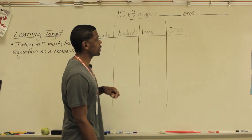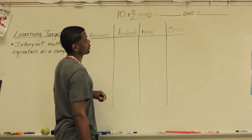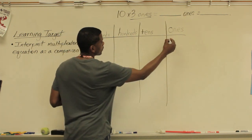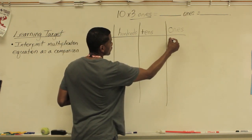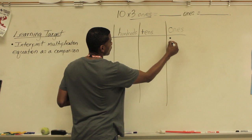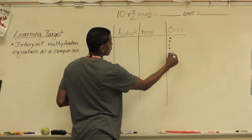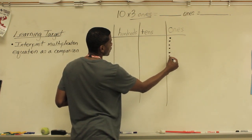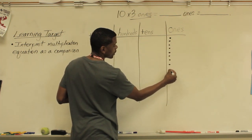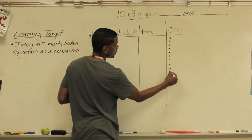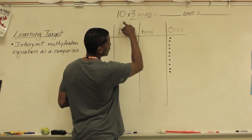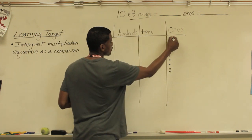What does that look like in the ones place? So what we're going to do is add dots — one, two, three, four, five, six, seven, eight, nine, ten — which is ten times.